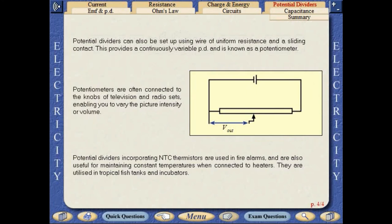Potential dividers can also be set up using wire of uniform resistance and a sliding contact. This provides a continuously variable PD and is known as a potentiometer. Potentiometers are often connected to the knobs of television and radio sets, enabling you to vary the picture intensity or volume.